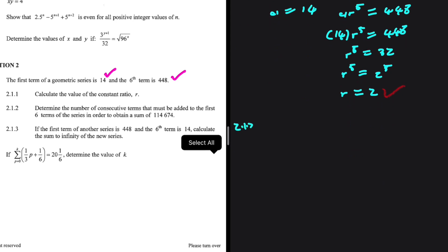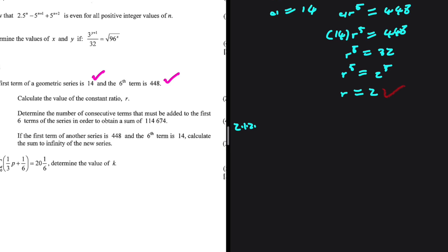Let's do 2.1.2. Determine the number of consecutive terms that must be added to the first six terms of the series in order to obtain a sum of 114,674. We have Sn equals 114,674, common ratio equals 2, and first term equals 14. If we find the total number of terms that give us that sum and subtract 6, we'll have the answer.